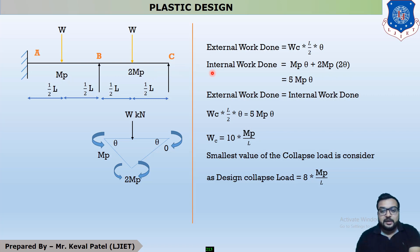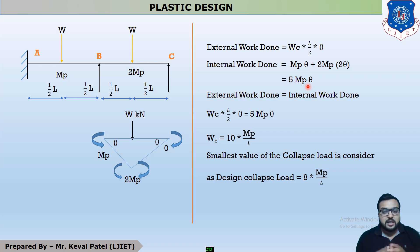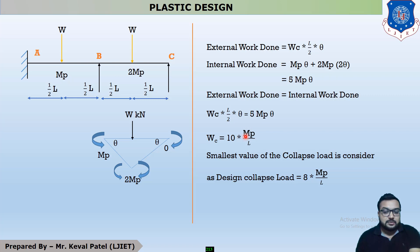External work done equals WC × L × theta/2. For internal work done: at the junction, the MP from the previous span acts clockwise, so for balance you must take MP anti-clockwise. The internal work done is MP×theta + 2MP×2theta, giving a total internal work done of 5MP×theta. Equating both: WC = 10MP/L. You now have two answers — 8MP/L and 10MP/L. The smallest value is taken as the design collapse load, which equals 8MP/L.